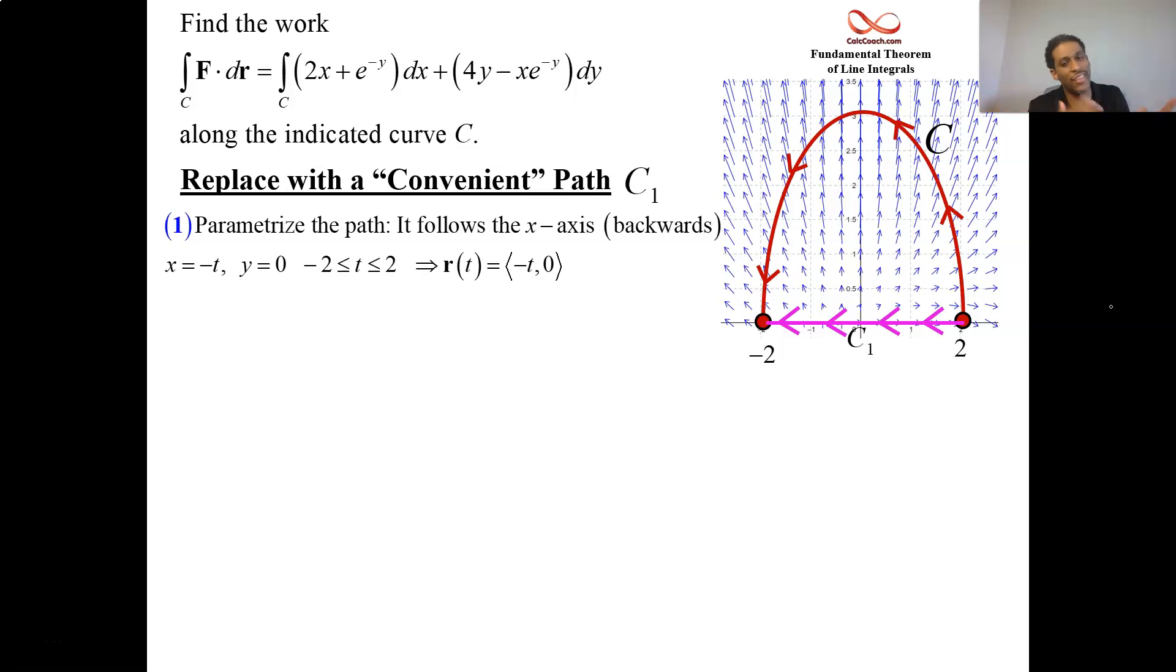From 2 to negative 2. Because we're going backwards like this on the x-axis, I think it's best to parameterize the path by letting, instead of x being equal to t, let x equal to negative t. Then t, which is supposed to start, you're supposed to start at x equals 2. So then that makes t equal to negative 2. You're supposed to end at x equal negative 2. That makes t equal to 2. 0, for why? Because you're on the x-axis.